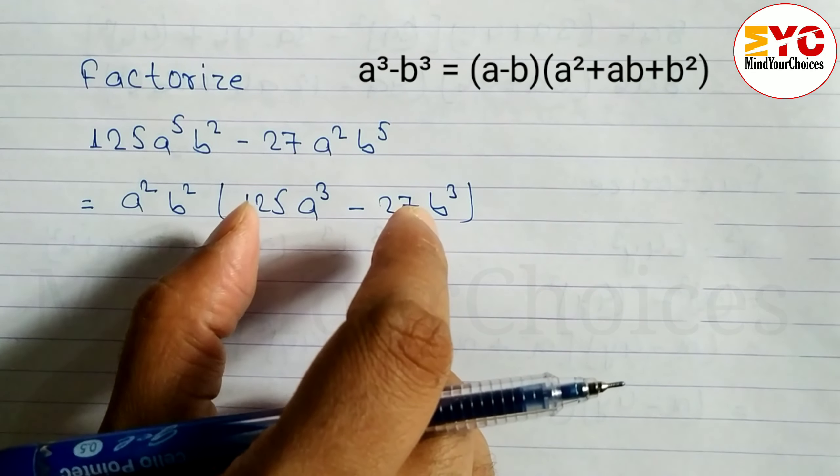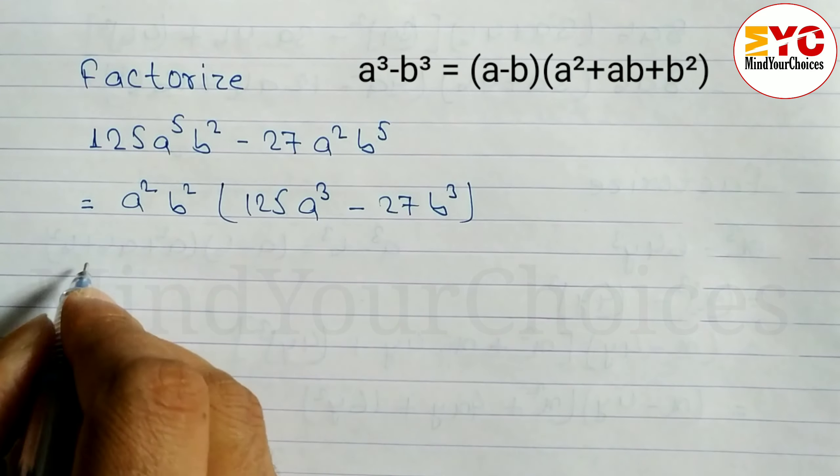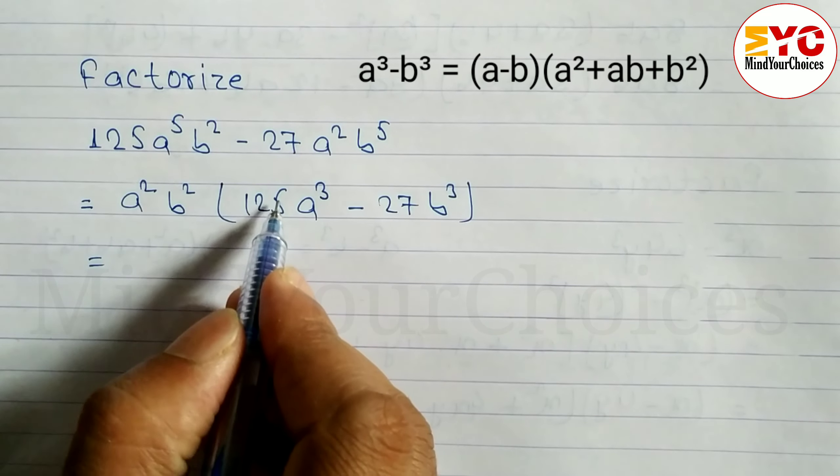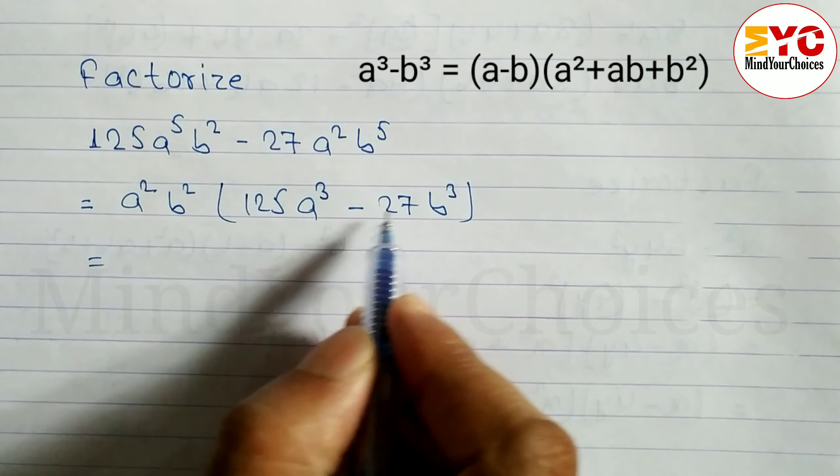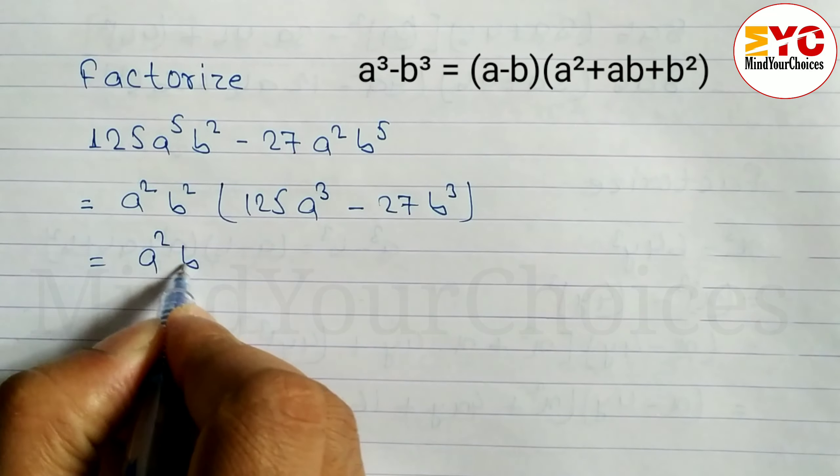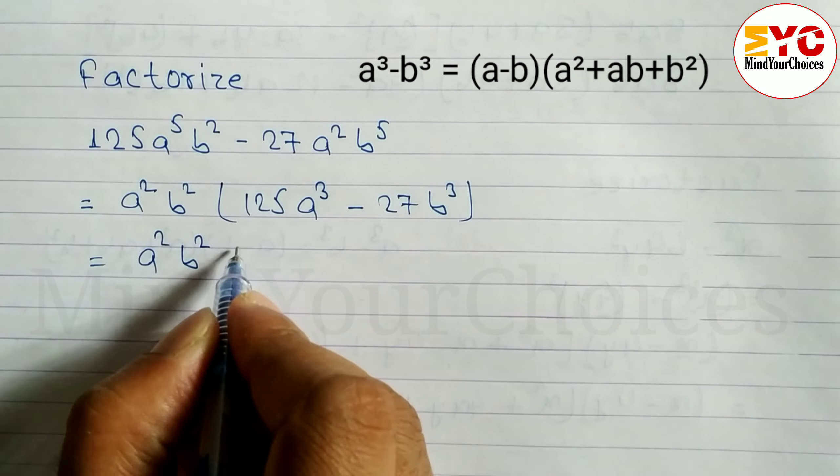Now we have to convert this to the form of a³ - b³, so we need to find the cube root of 125 and cube root of 27. We can write a²b², and the cube root of 125 is 5.